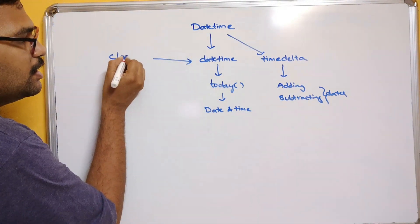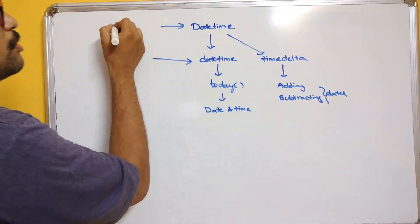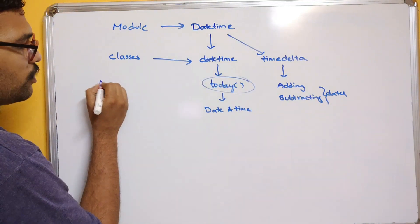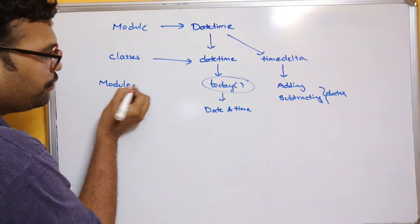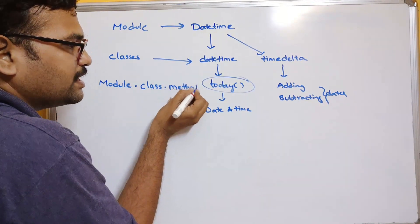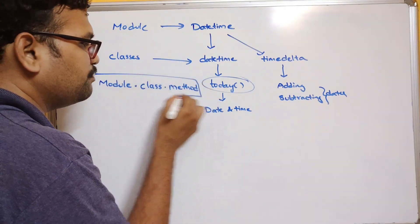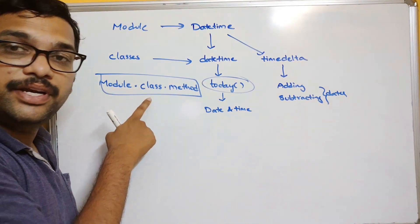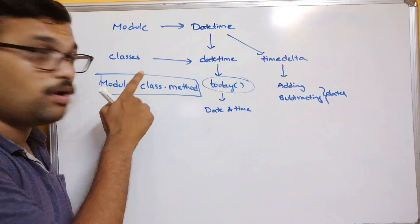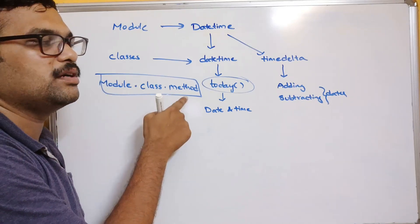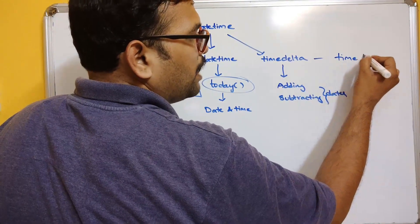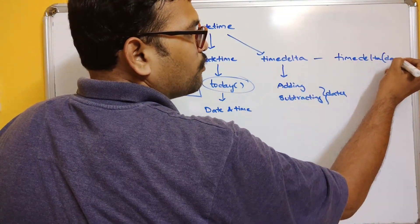These are all classes and datetime is the module. If you want to access any method, we need to write module_name.class_name.method. So if the method is available inside the class, and the class is available inside the module, we call module_name.class_name.method. The timedelta constructor accepts parameters like days, weeks, or years.